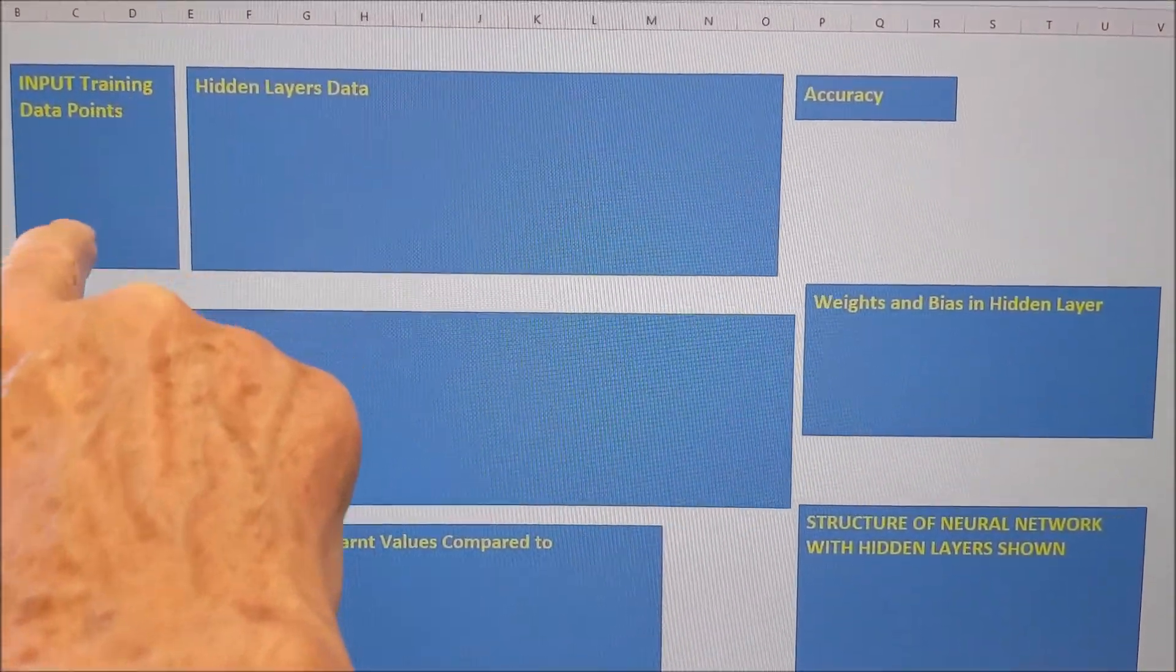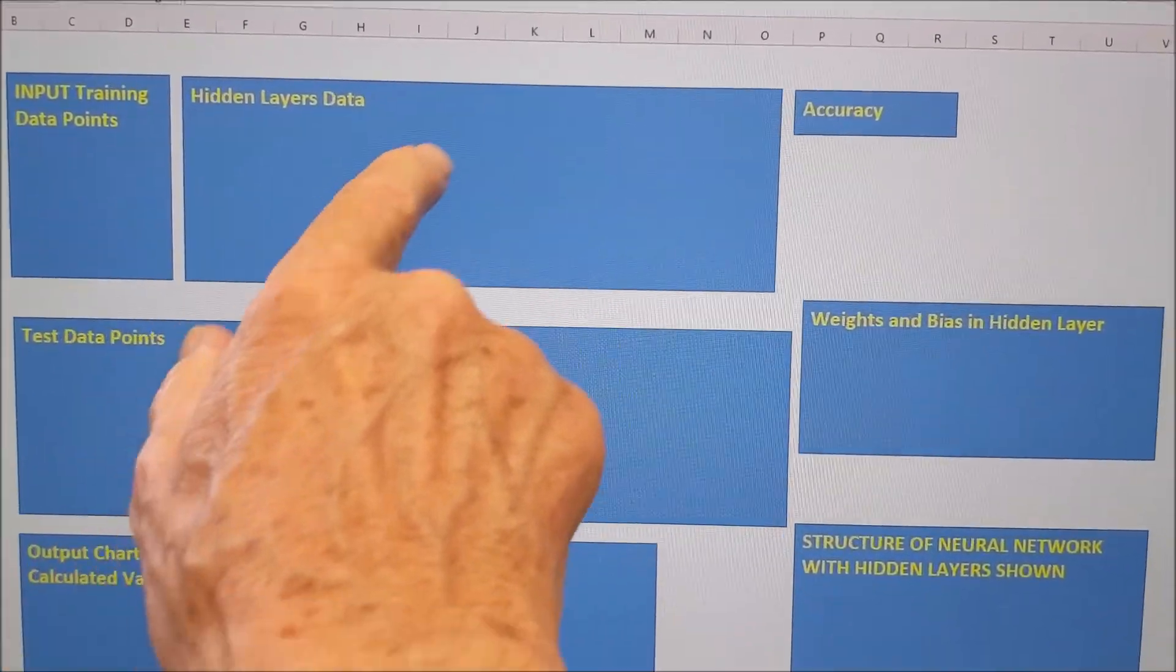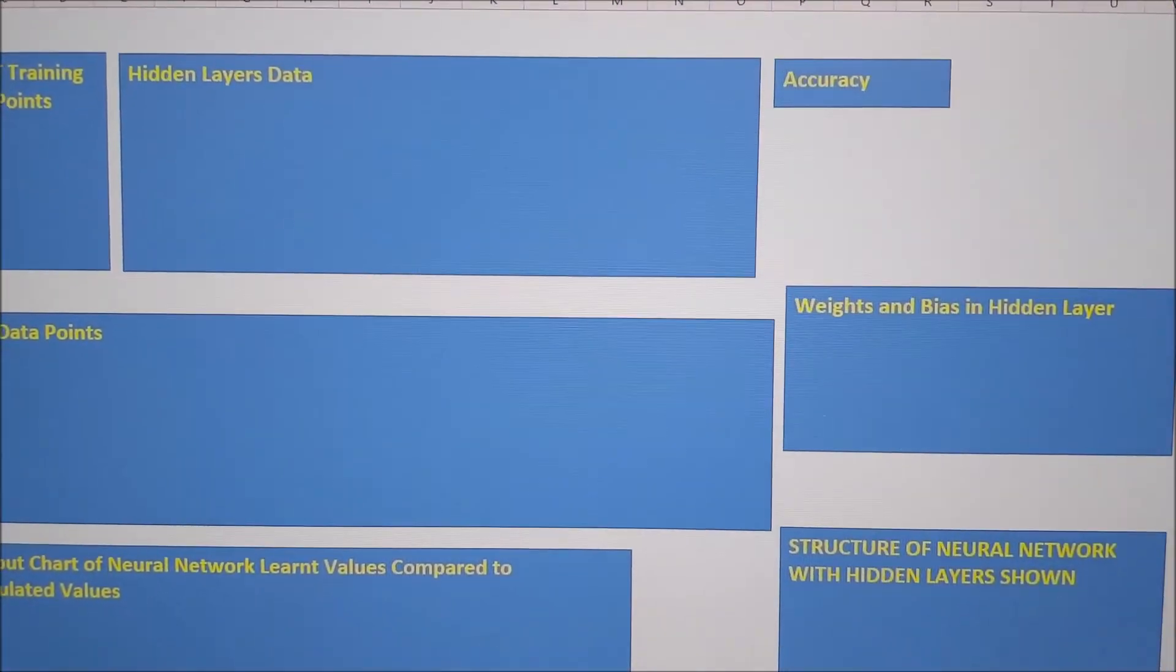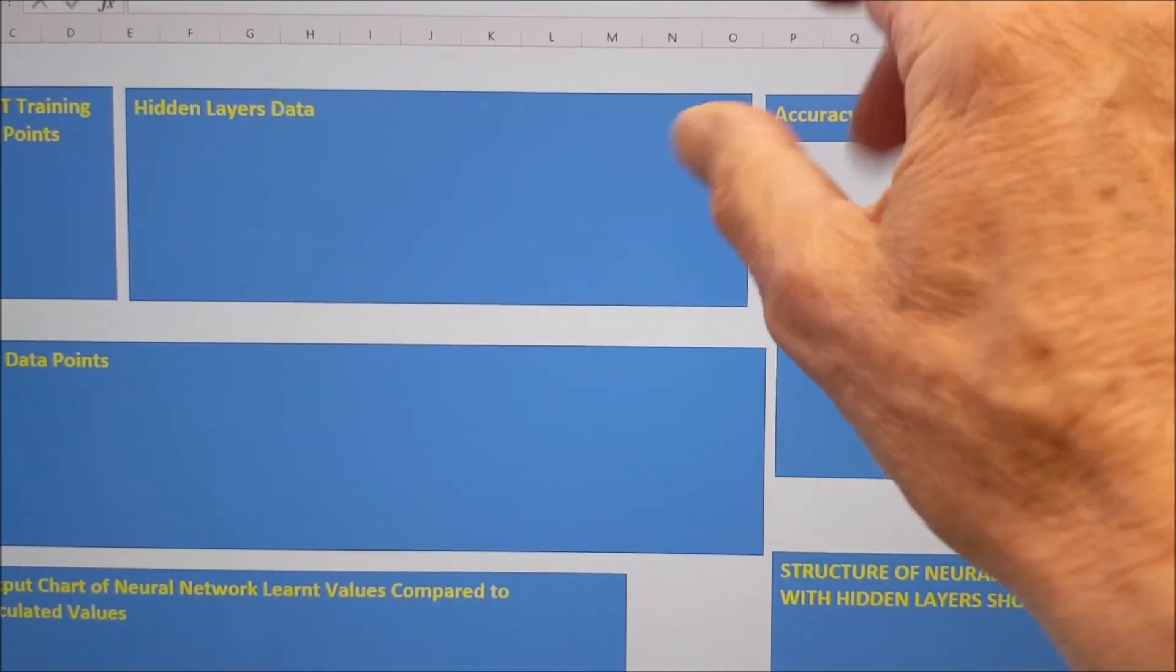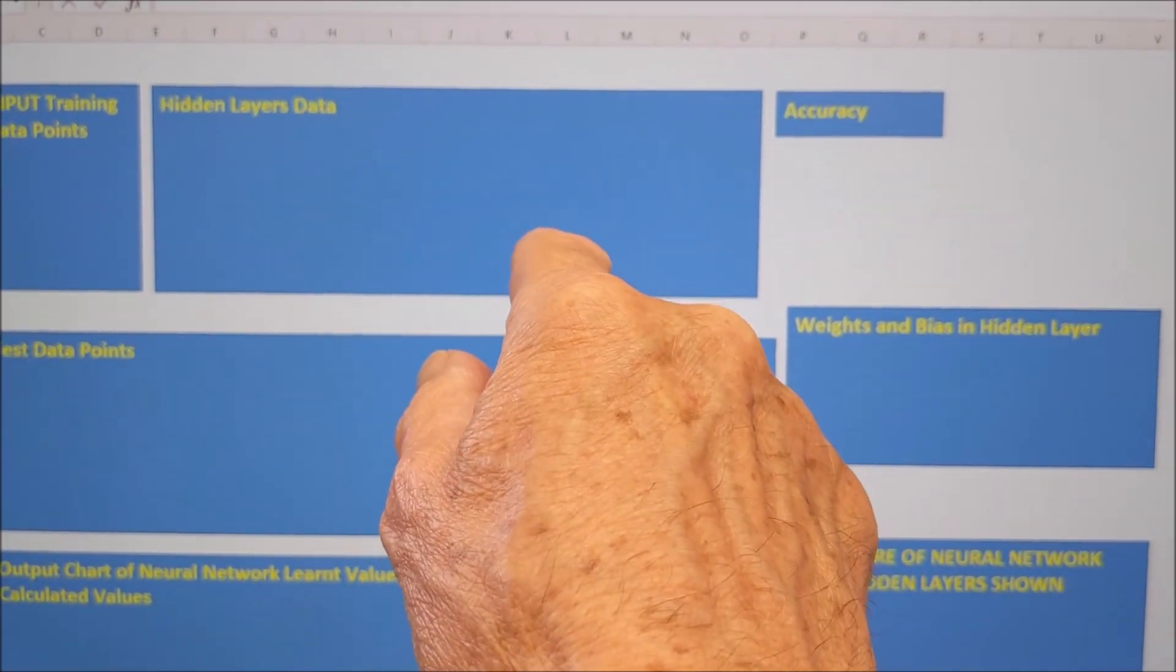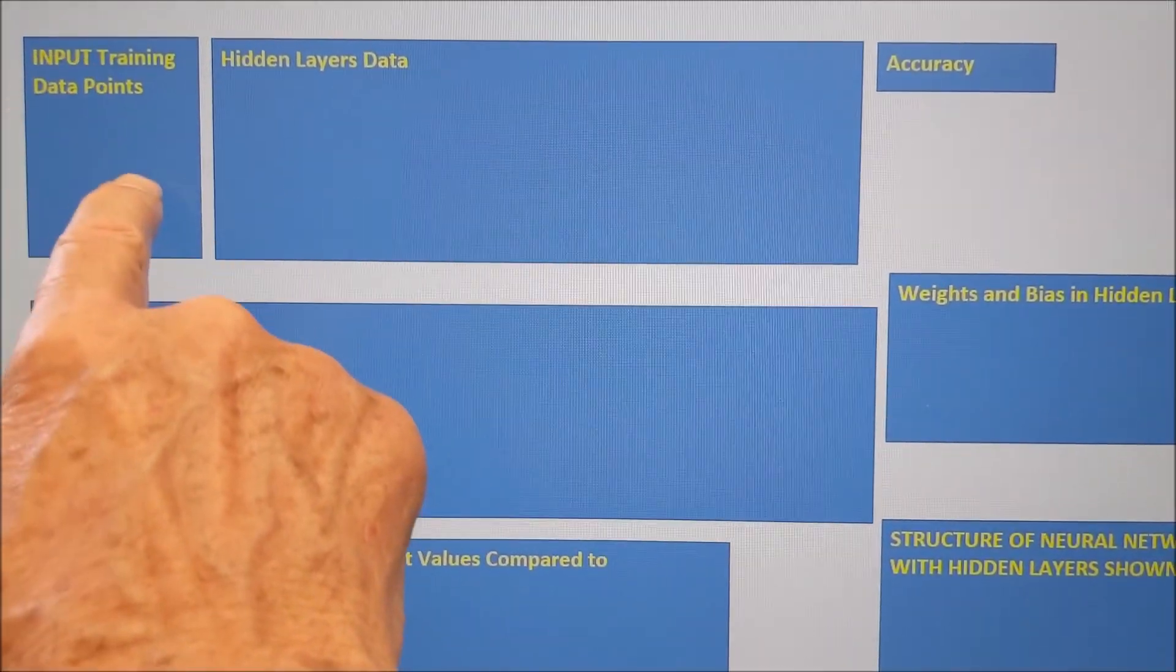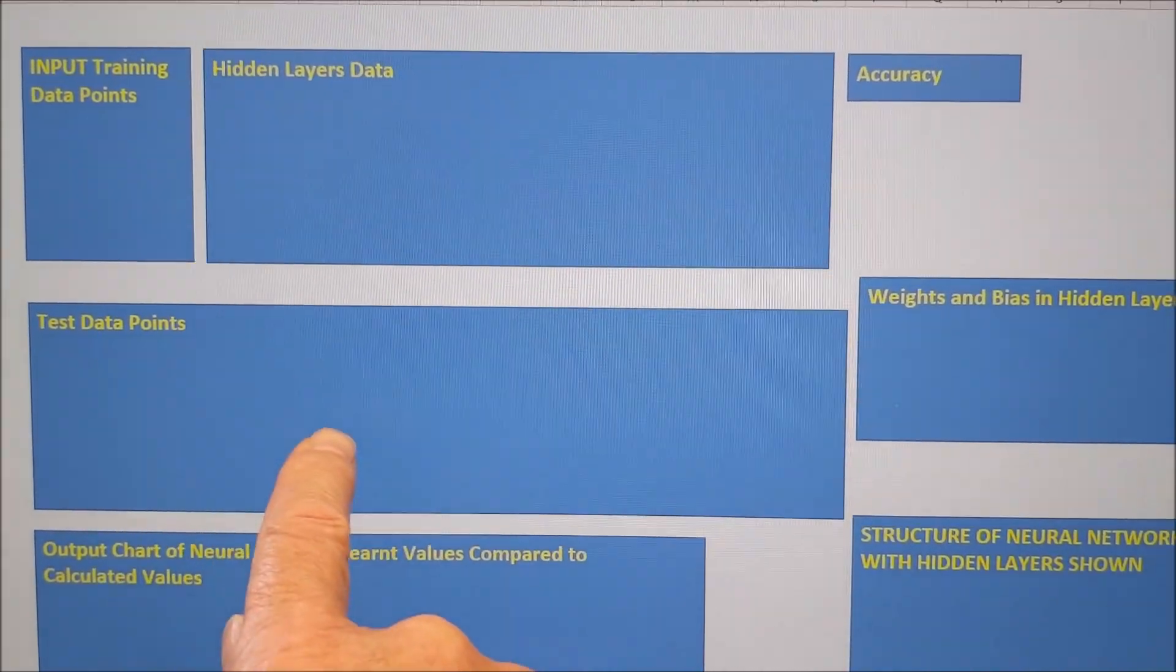This is the input data points. There's five data input points. There's a sine wave we're using. These are data values for the hidden layer. We'll come back to that in a minute. This is the accuracy figure. It continually revises accuracy and we drive the accuracy as accurate as possible, which drives these figures to update themselves. These are the test data points. So we've got input training points and test data points. We don't use them. Don't mix them up.